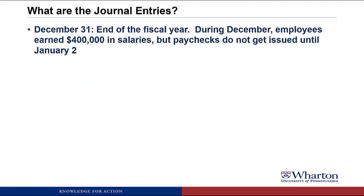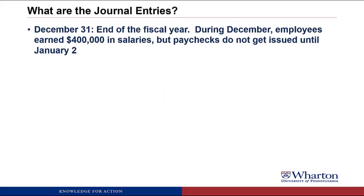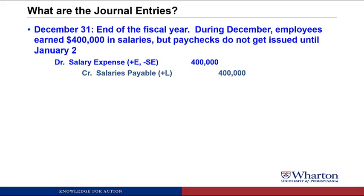Next set of transactions. It's December 31st — the end of the fiscal year. During December, employees earn $400,000 in salaries but paychecks do not get issued until January 2nd. We need an adjusting entry because employees have worked for us. Even though they haven't been paid, we recognize an expense. We debit salary expense for $400,000. We haven't paid cash but we owe it, so we credit salaries payable for $400,000.